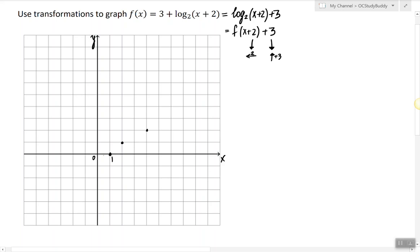At 1 half it's negative 1, and so on, and we'd have a vertical asymptote at x equals 0.